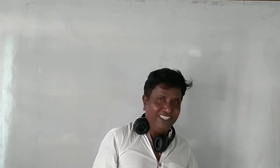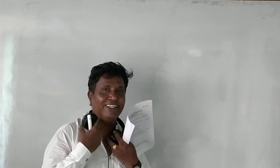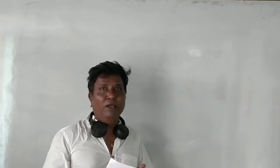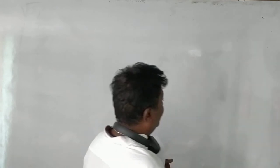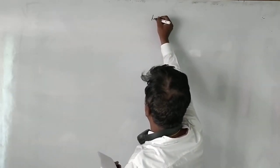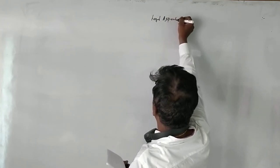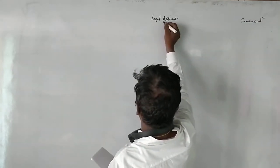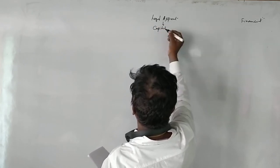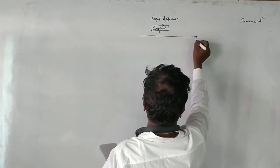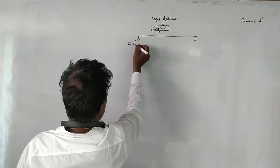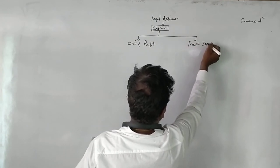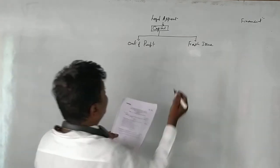Before passing journal entries, we need to arrange for the capital portion of redemption as well as the redemption premium portion. For that we need to understand the legal aspect and financial aspect. In the legal aspect we deal with the capital portion. Capital portion can be arranged either out of profit or by fresh issue. The total preference share capital is 5 lakh rupees.